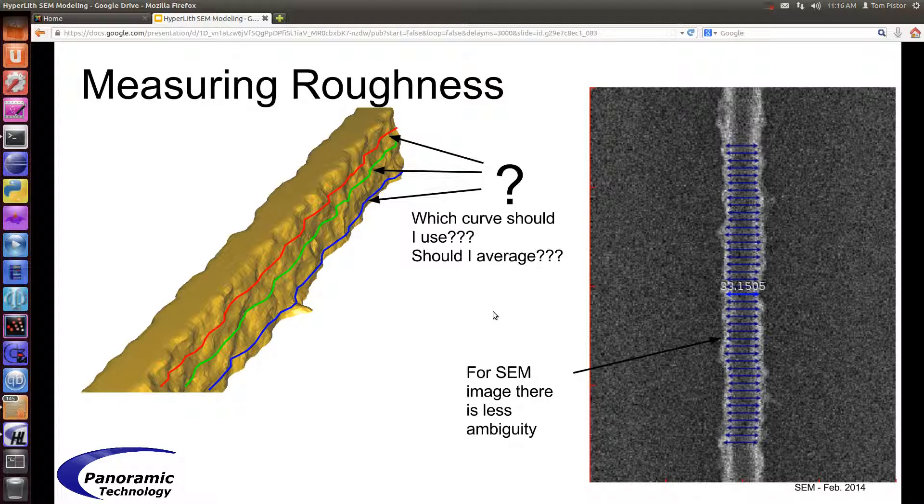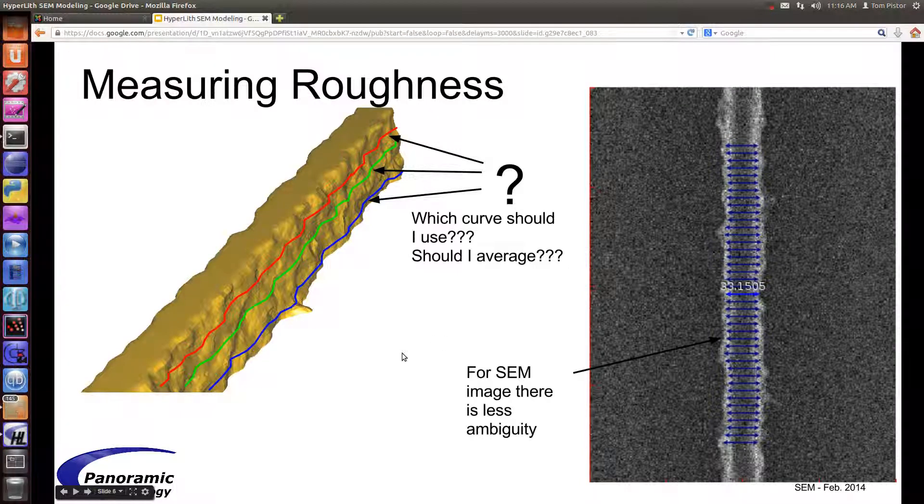You have a SEM measurement algorithm that gives you a CD at several places, and then you take the stochastic analysis of those various CDs. So if you're going to compare roughness of simulated resist profiles, you should really compare the roughness of simulated SEM profiles to actual SEM profiles.